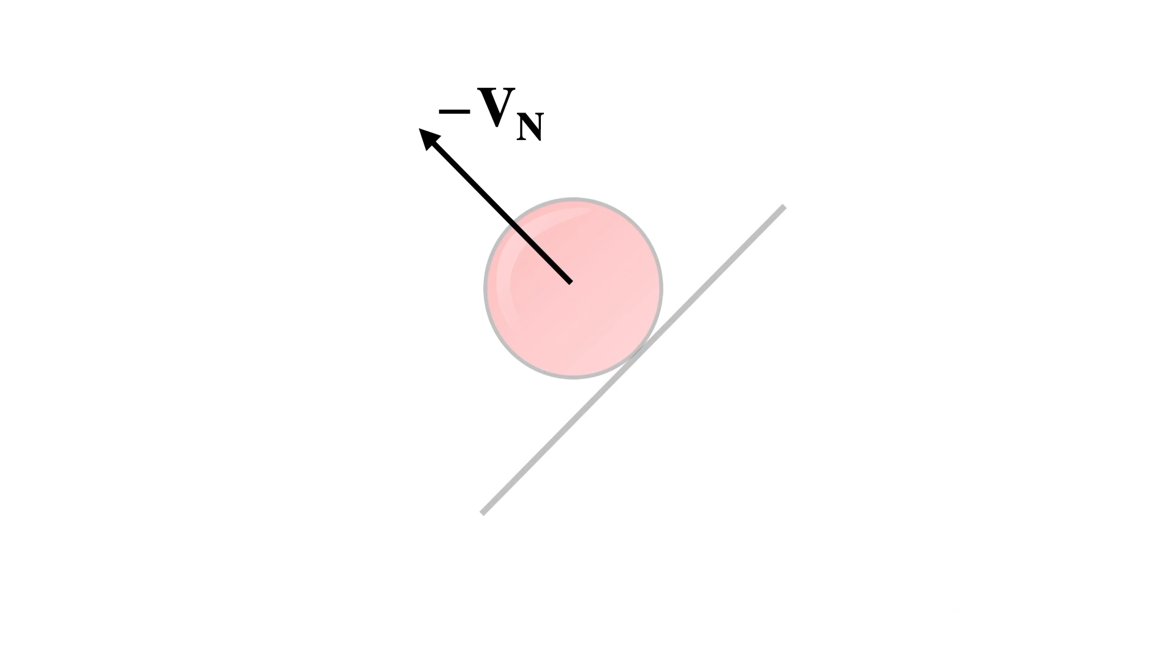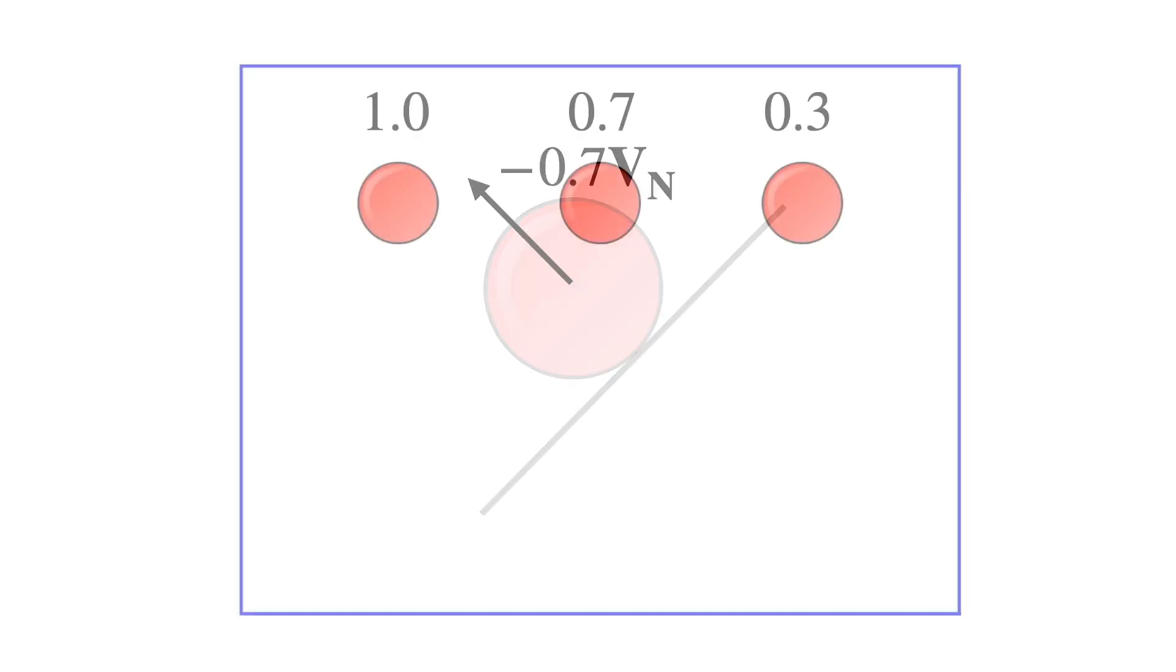Most balls lose a bit of energy with each bounce. You can simulate this by multiplying the inverted velocity by a value between 0 and 1. It lets you control how bouncy your ball is.